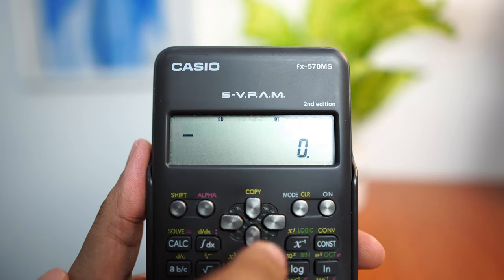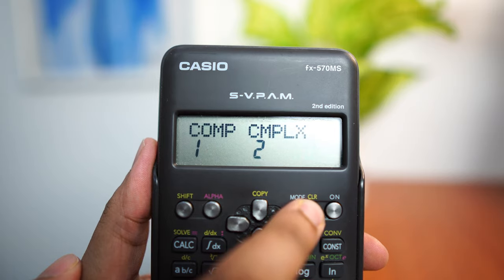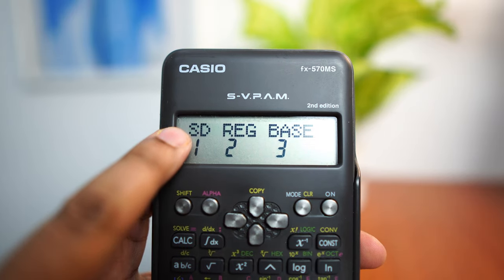Before we start solving problems, let me show you how to set the calculator first. All you need to do is turn on your calculator, press mode until you see SD, choose SD.